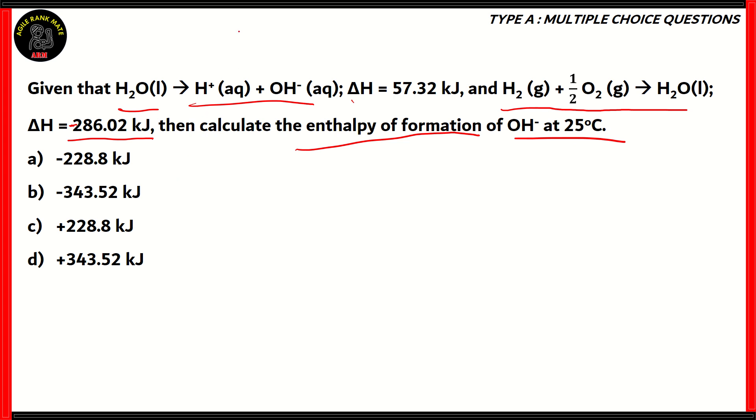So basically, we take them as two equations. Equation 2, and the formation being equation 1, the formation of water, and splitting of water being equation 2. We're going to add 1 and 2. H2 plus half O2 gives H2O. Delta H equals minus 286.02. And the second equation is H2O gives H+ plus OH-. And here, delta H is 57.32.